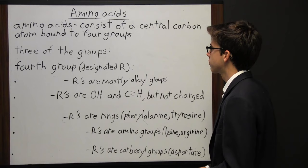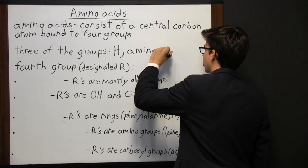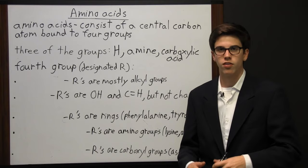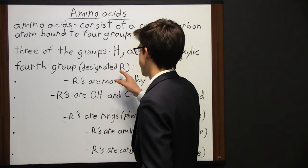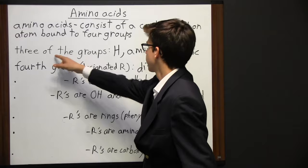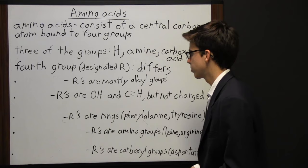Amino acids consist of a central carbon atom bound to four groups. In every amino acid, three groups are always the same: hydrogen, amine, and a carboxylic acid. The fourth group — designated R — differs among the 20 naturally occurring amino acids, and can be any type of chemical chain.